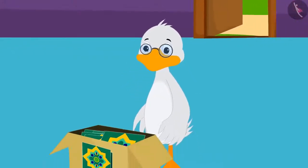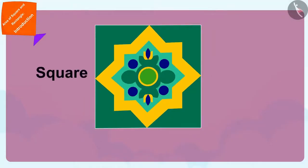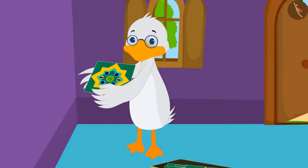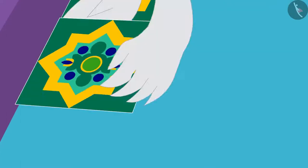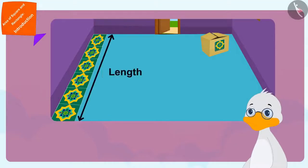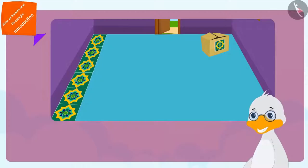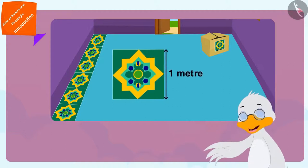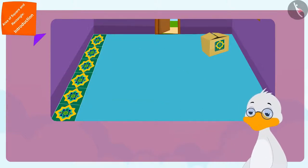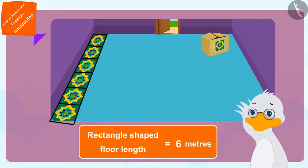After reaching home, Uncle started laying down the tiles. Each tile is square in shape and its edges are 1 meter long. Uncle first started laying tiles along the length of the floor. He saw that there were a total of 6 tiles in the length of his floor. The length of my floor is equal to 6 tiles with 1 meter long edges — that means my rectangle shaped floor is 6 meters long, thought Uncle.